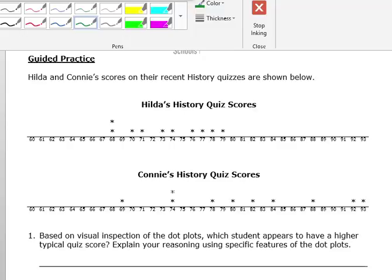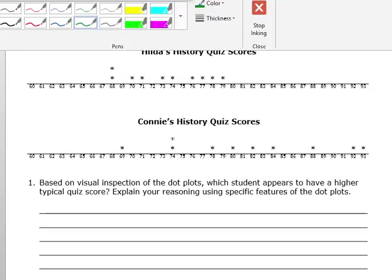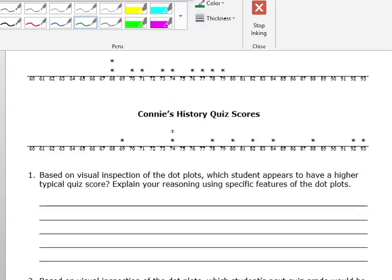The question is asking me, based on just a visual inspection, which student appears to have a higher typical quiz score. This word typical, when we're looking at data, you're not saying who scores the highest every single time, but based on what I'm looking at, who has a higher typical score. We're going to explain our reasoning using specific features.